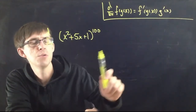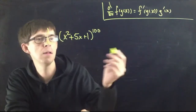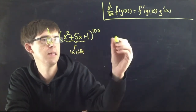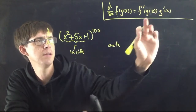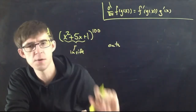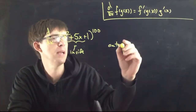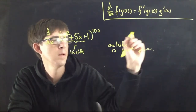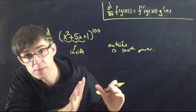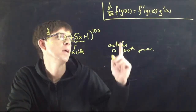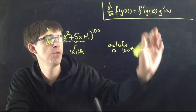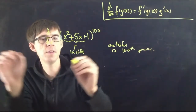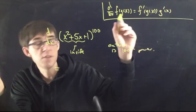Identify what part is the inside and what part is the outside — usually it's easy to tell. The slogan form says: take the derivative on the outside and leave the same thing on the inside, then multiply by the derivative on the inside. So I look at this 100th power and do the derivative: bring the exponent down in the front using the power rule.